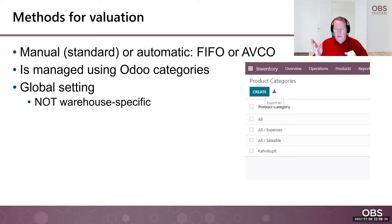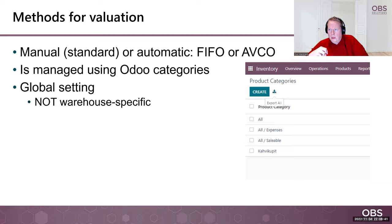I have no idea why Odoo works that way, because it simply doesn't make any sense. I would actually call manual something like 'don't follow the inventory valuation at all.' So the automatic is the way to go. But when going automatic, you have to decide how you want to do it automatically — do you want to use the first in, first out principle, or average cost?